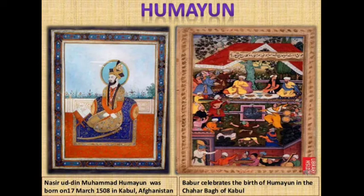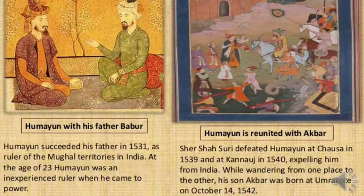Humayun was the second ruler of the Mughal Empire. His full name was Nasiruddin Muhammad Humayun. He was born on 17th March 1508 in Kabul, Afghanistan. There is a picture depicting Babar celebrating the birth of Humayun in the Chahar Bagh of Kabul, and another showing Humayun with his father Babar. Humayun succeeded his father in 1531 and at the age of 23 became the ruler of the Mughal Empire.